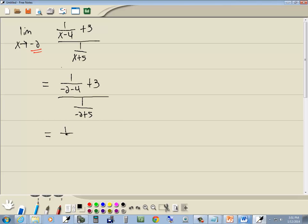That gives us 1 over negative 2 minus 4 is negative 6 plus 3, over 1 over negative 2 plus 5 is 3.